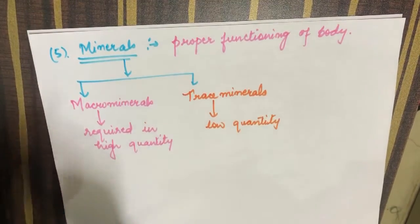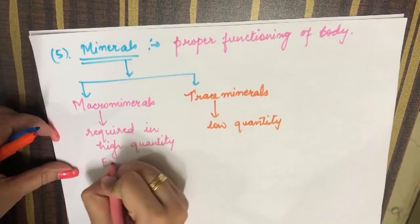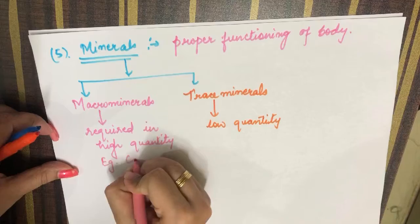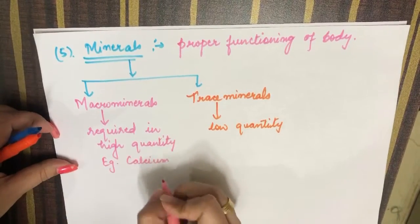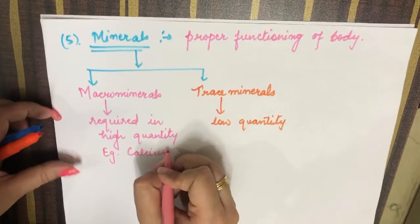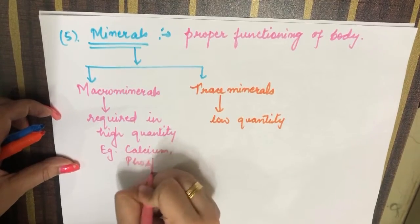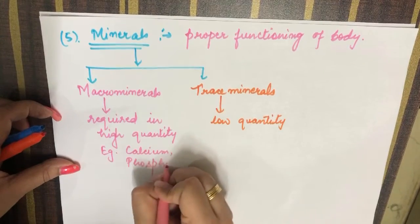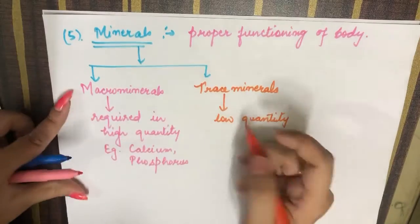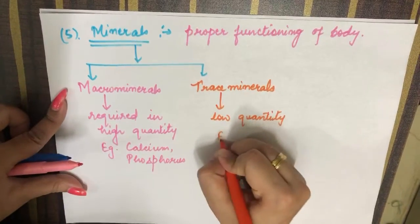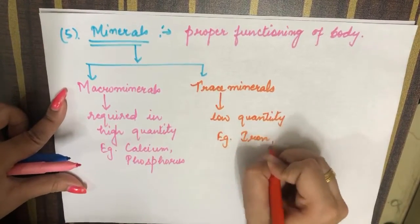Examples in the macrominerals category include calcium and phosphorus, while examples of trace minerals include iron and zinc.